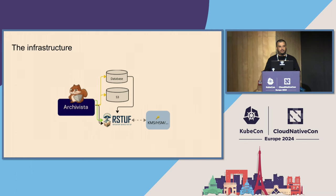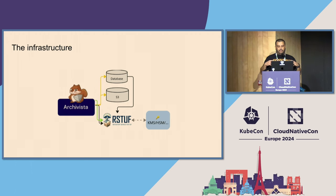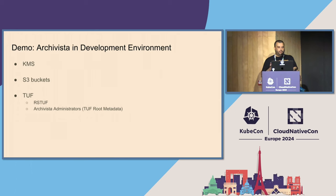Archivista currently has a database — SQL for graphical queries — and also stores attestations in S3 buckets, compatible with AWS S3. What is new is the layer we are adding with our-stuff, which uses the same components: the database and S3. We will be signing every time you add a policy. The layer includes the KMS key, the S3 bucket, and also the TUF metadata signing.